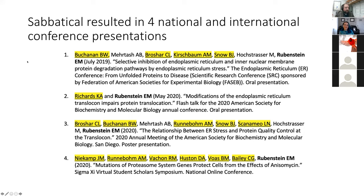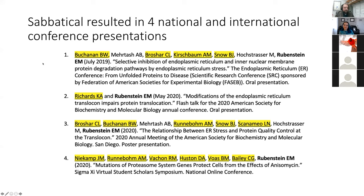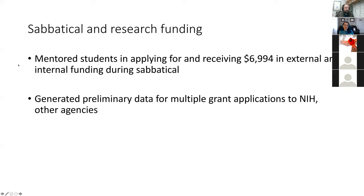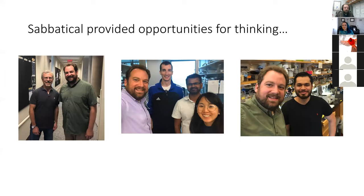During sabbatical, either I or my students presented our work at four national and international conferences, with excellent student co-authors highlighted. Sabbatical provided the opportunity to mentor students in applying for and receiving nearly $7,000 in research funding. We also generated a substantial amount of preliminary data to support applications for funding to the NIH and other agencies. While my initial plan was to travel to a collaborator's lab to perform mass spec, the data dictated that we go in a different direction. Most of my time was spent in Muncie, but I did take a scientific retreat — a week in New Haven with my postdoctoral advisor Mark Kockstrasser and friends at Yale University, where we exchanged ideas and I left with many new ideas to bring forward to my lab.